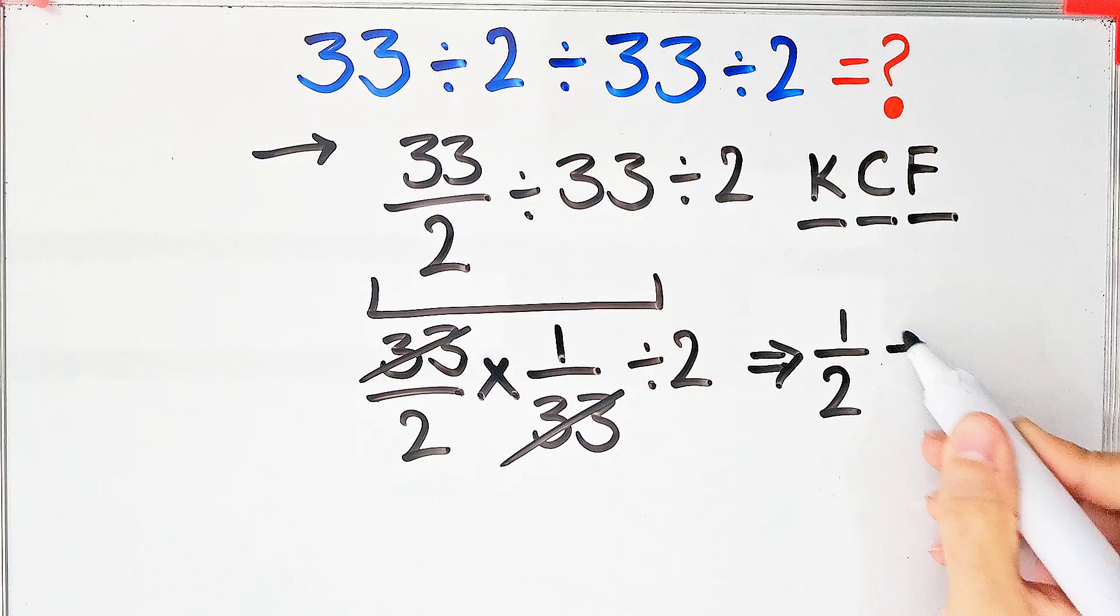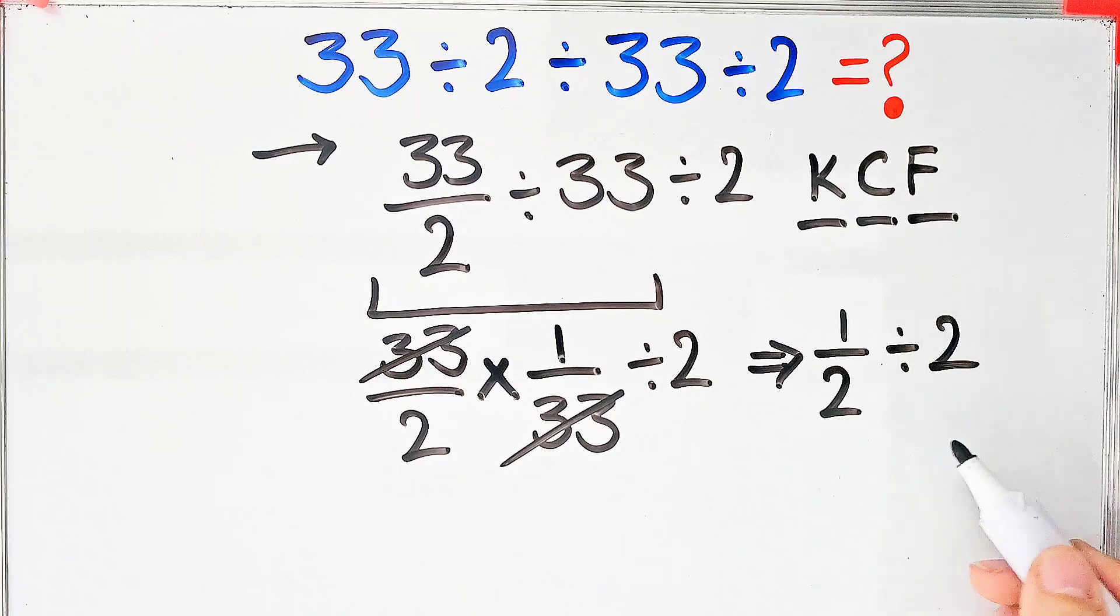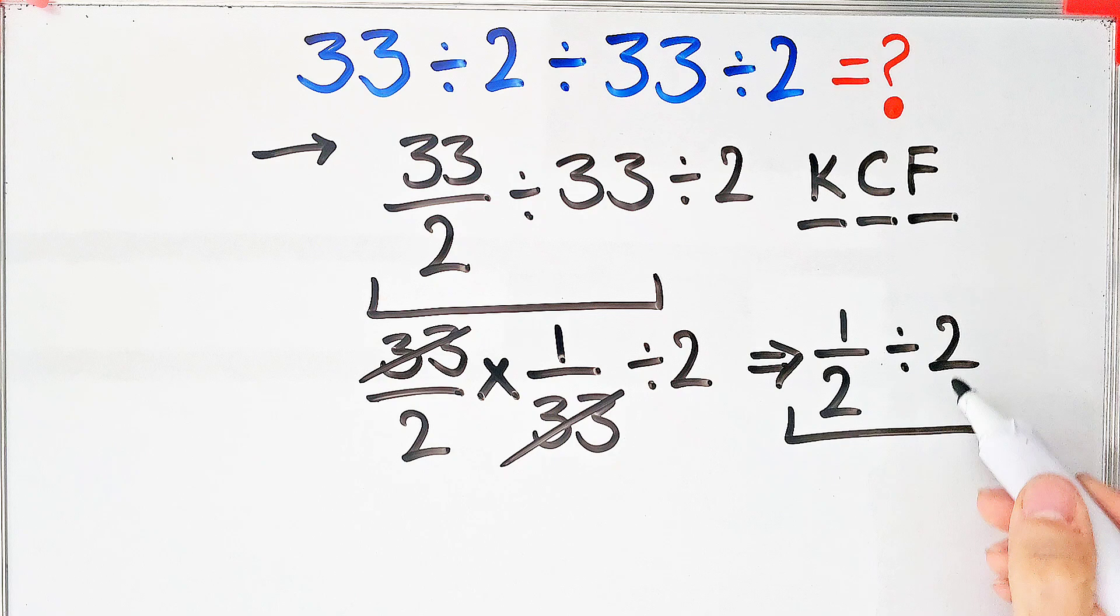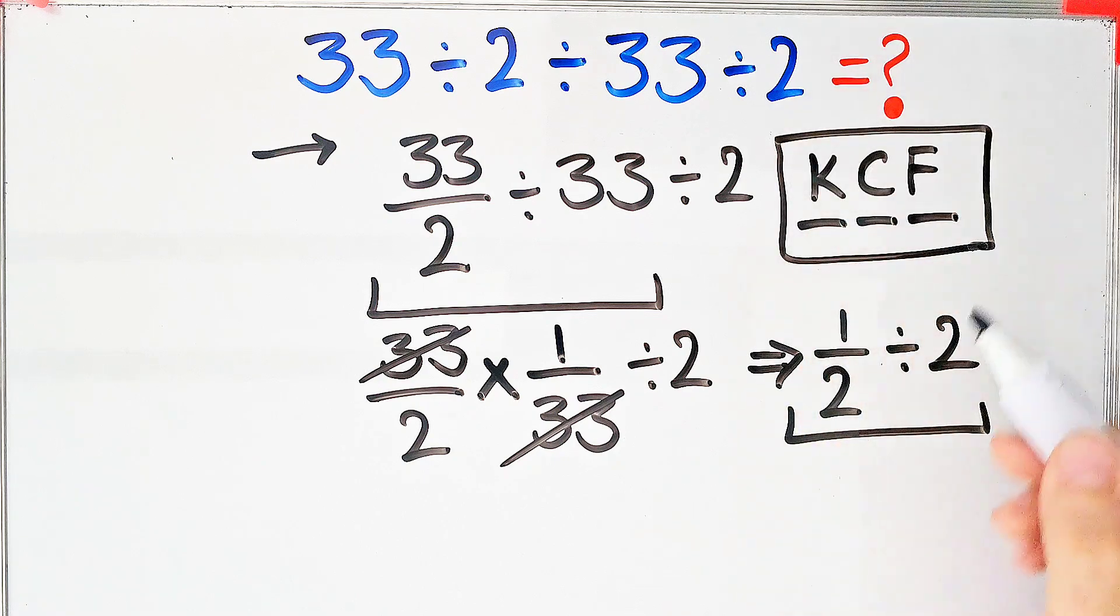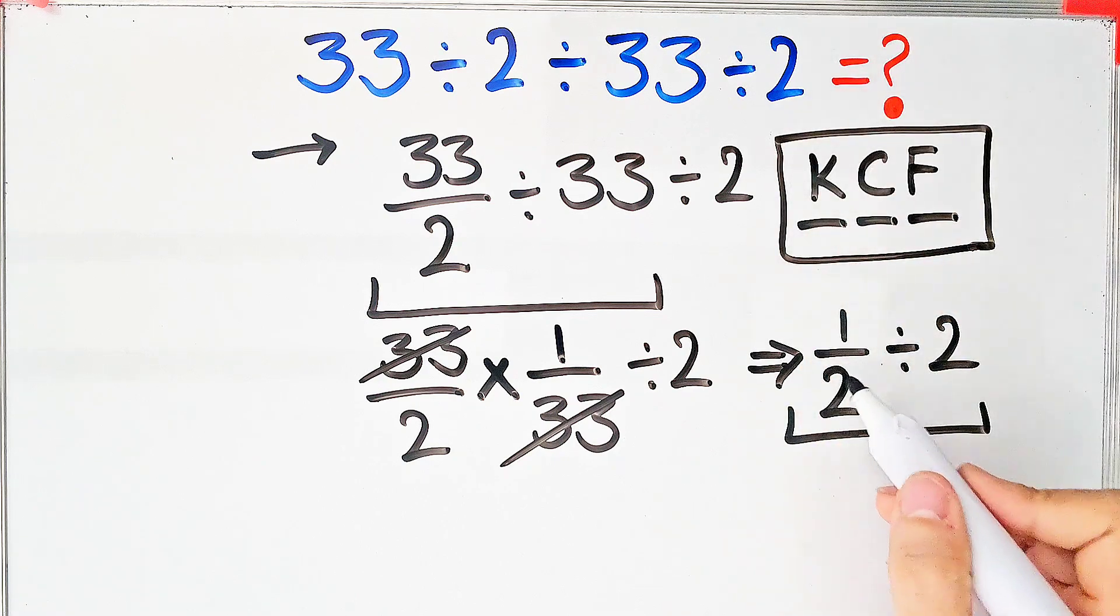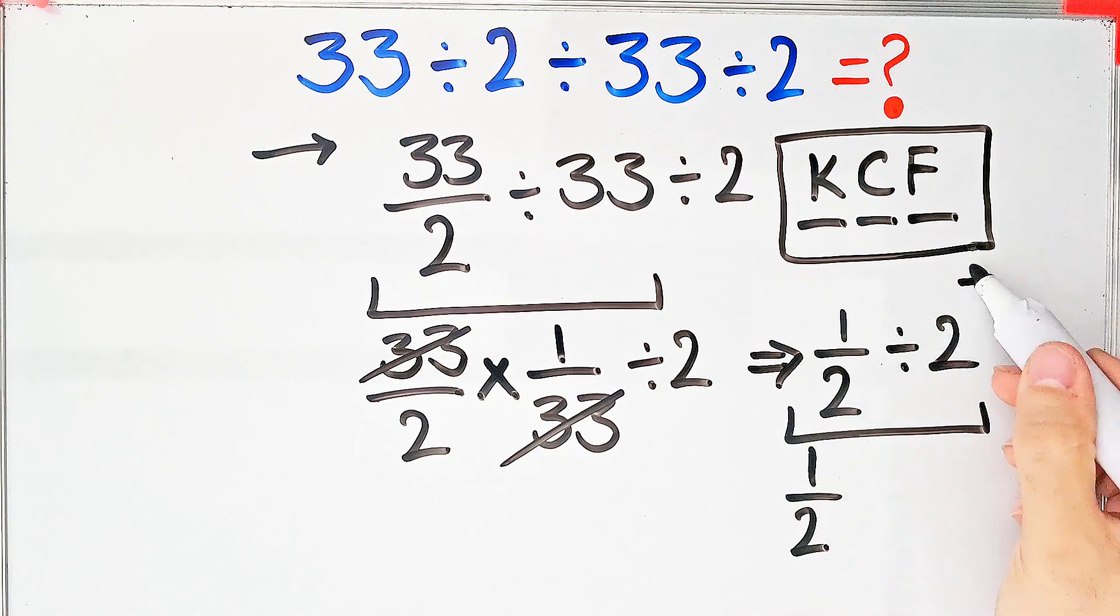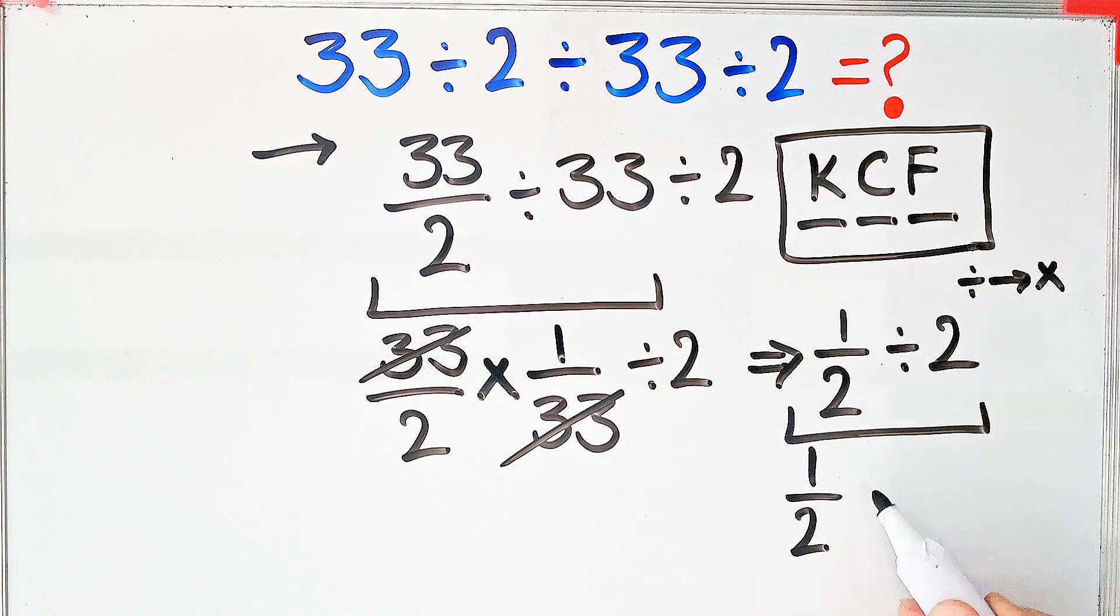Again, to solve this part, we need to follow the KCF rule. We have 1 over 2 divided by 2. We keep the first fraction as it is. After that, we change the division sign to the multiplication sign. And after that, we flip the second number.